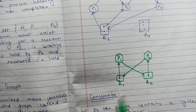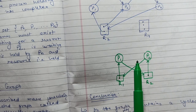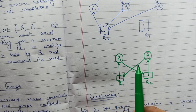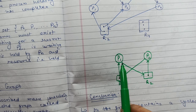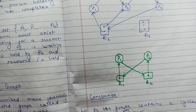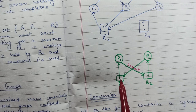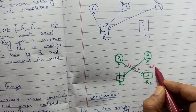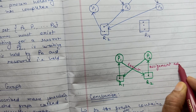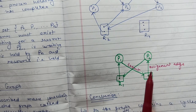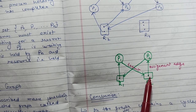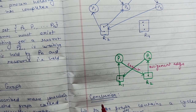The directed edges work as follows: a request edge goes from a process to a resource, meaning the process is requesting that resource. An assignment edge goes from a resource instance to a process, meaning that resource has been allocated to that process. These are the two types of edges in a resource allocation graph.